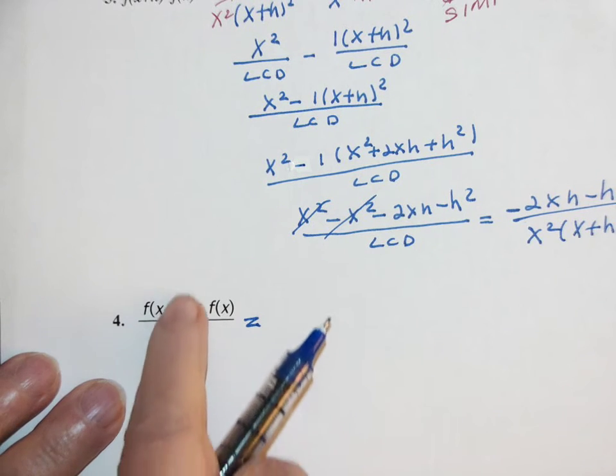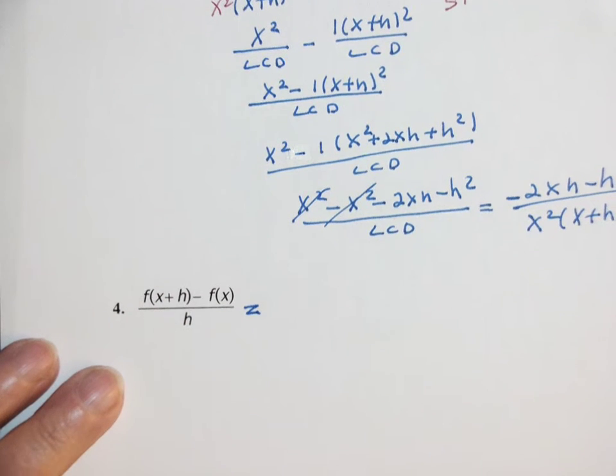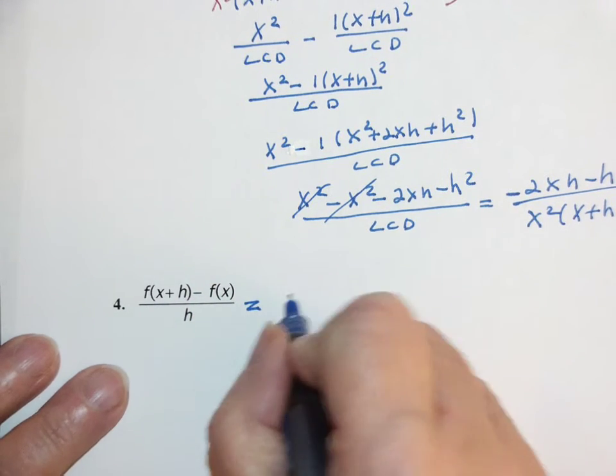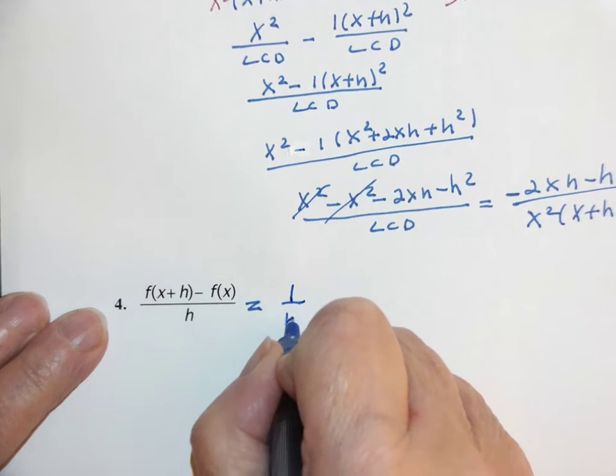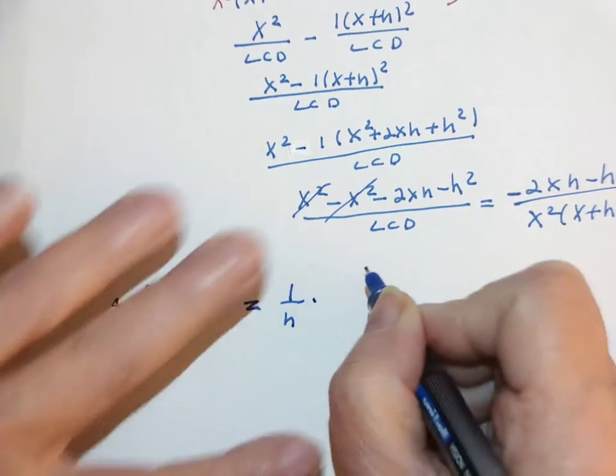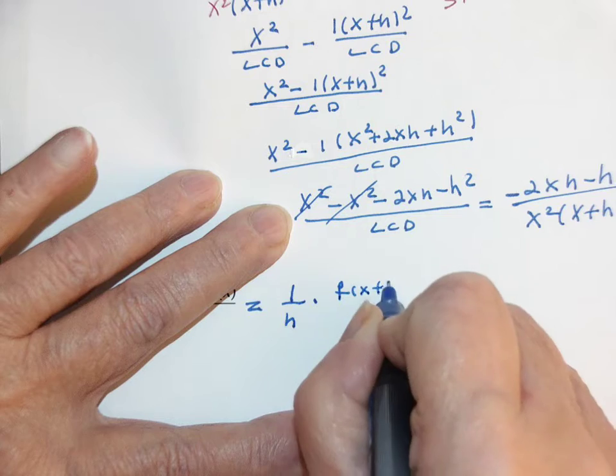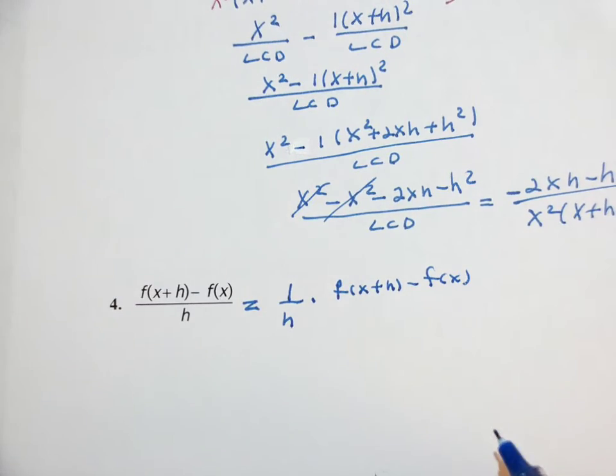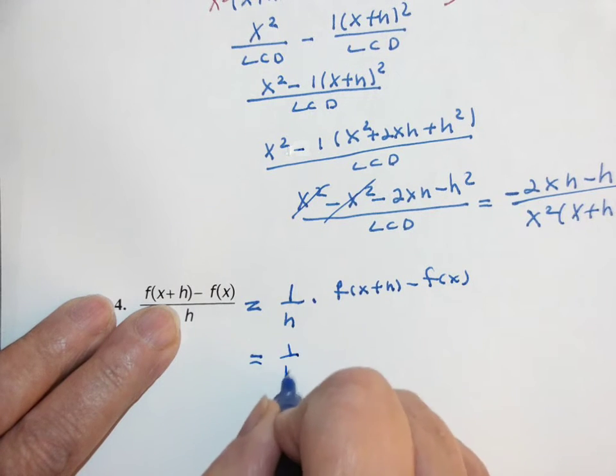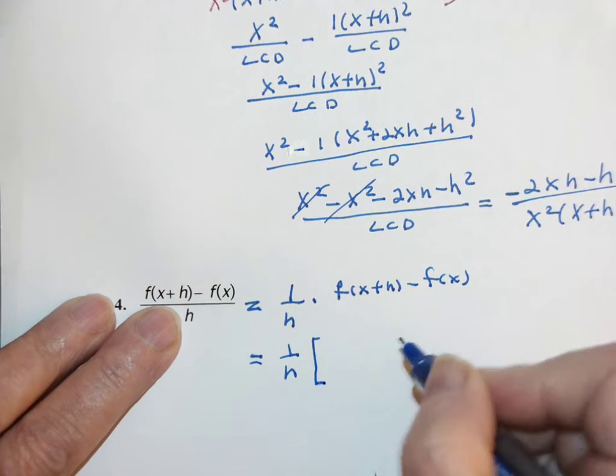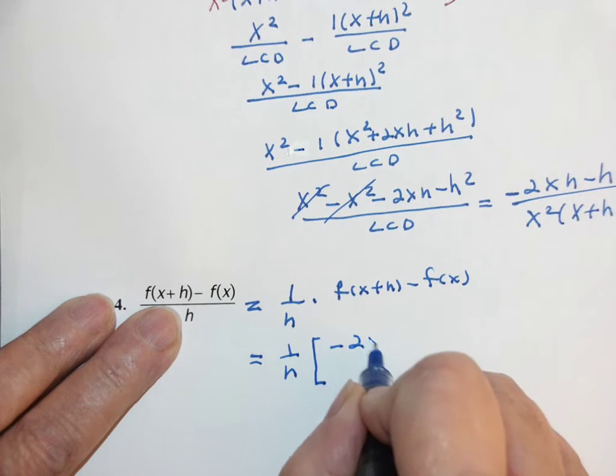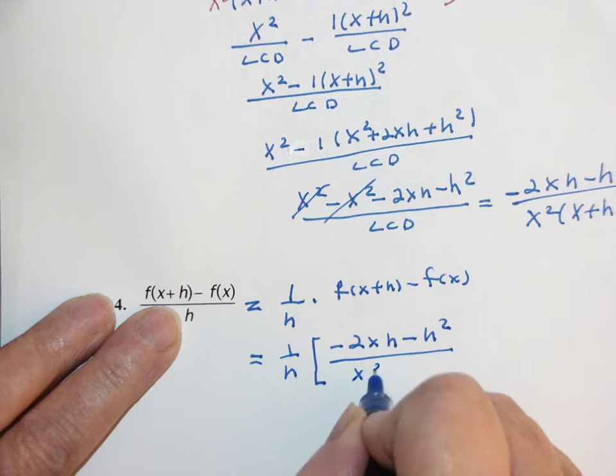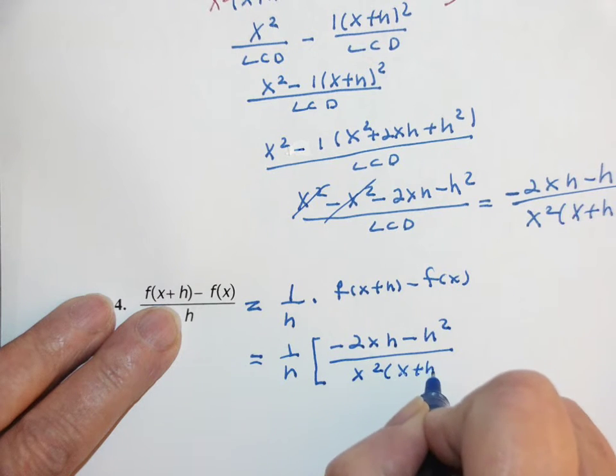To make life easier, this fraction can be written as 1 over h times f(x+h) minus f(x). So this becomes 1 over h times negative 2xh minus h² all over x²(x+h)².